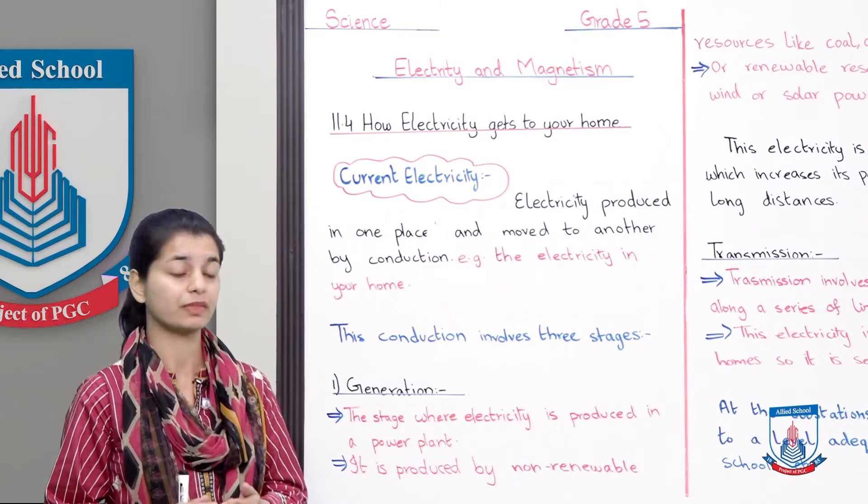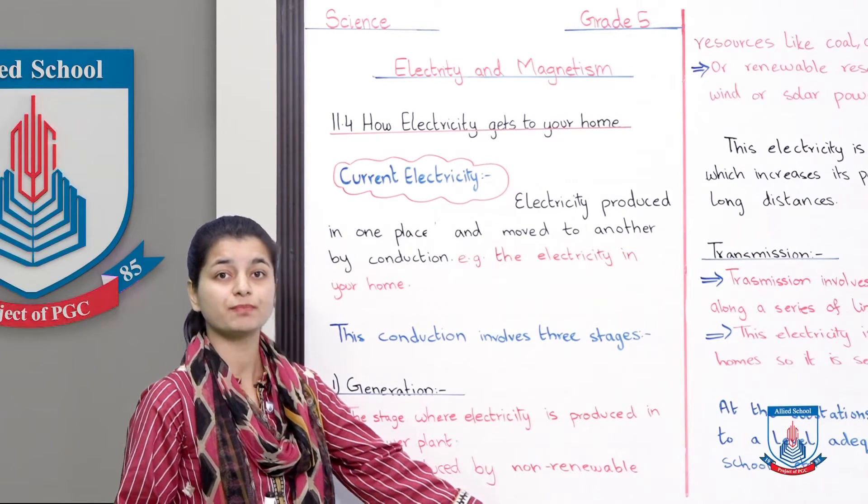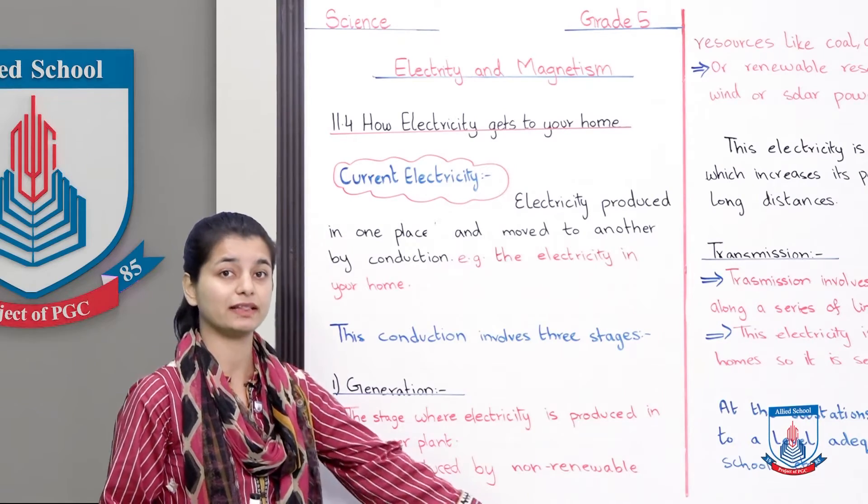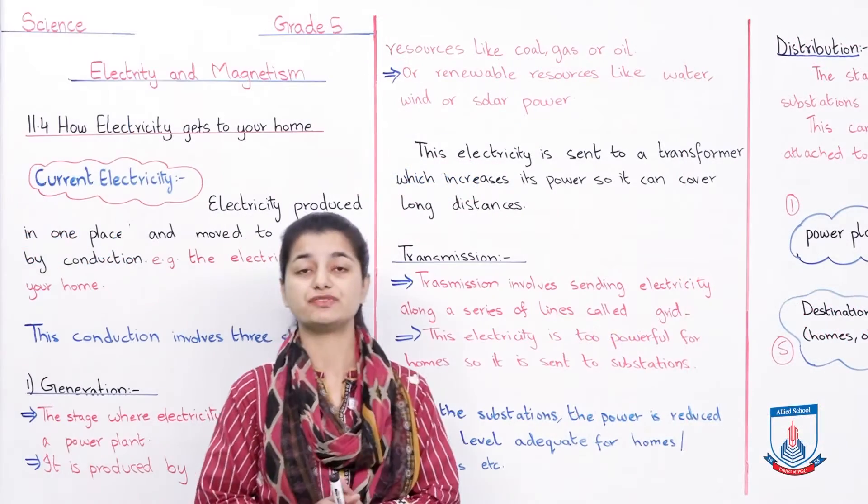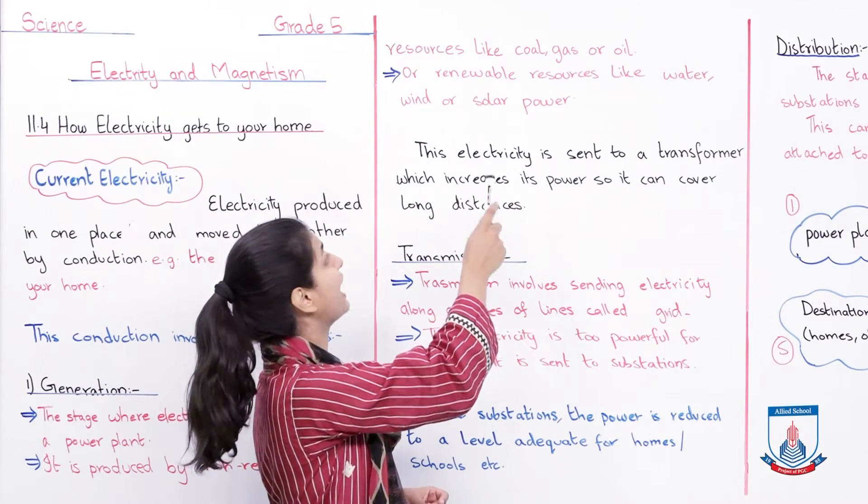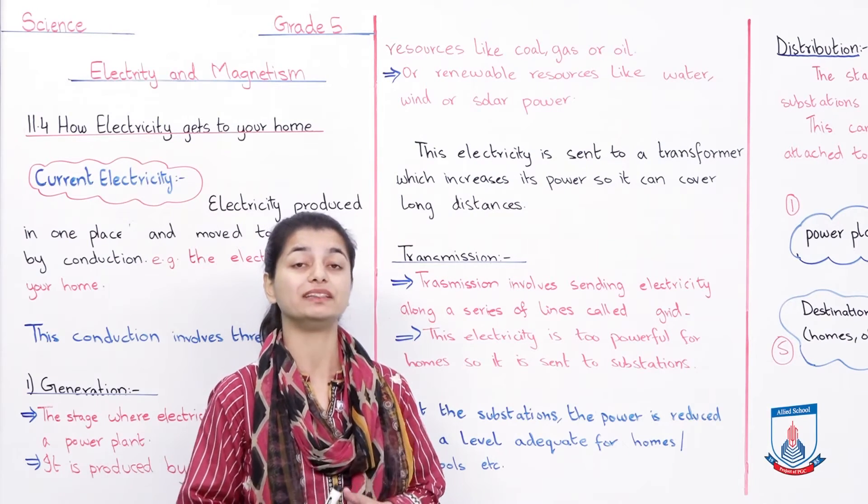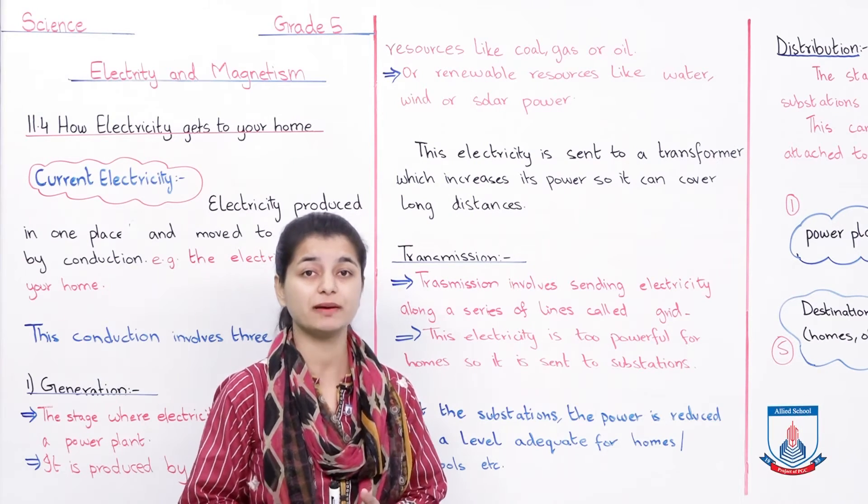It is produced by non-renewable resources. Let's read - it is produced by non-renewable resources like coal, gas, or oil. I mentioned we would explain what things it's made from.